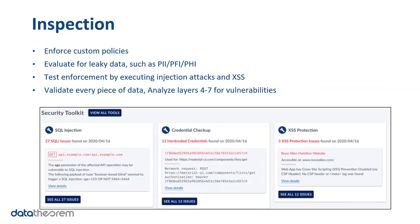Once we've found your entire inventory, we'll help you organize it by project using the asset groups feature, which enables you to select APIs with an assigned specific security policy composed of custom checks that you want on a continuous basis. You can also take it one step further with our custom attack toolkits. As you can see here from the dashboard screenshot, there are three custom toolkits that you can choose: SQL injection, credential checkups, and cross-site scripting protection.